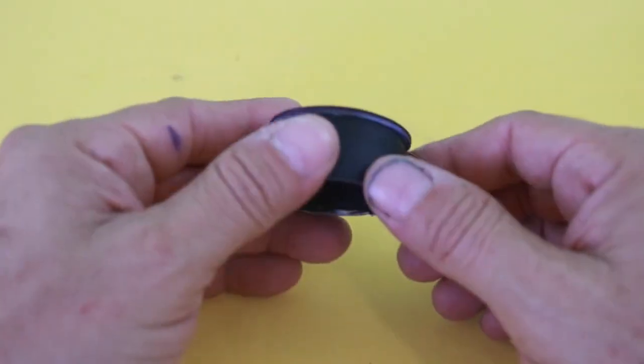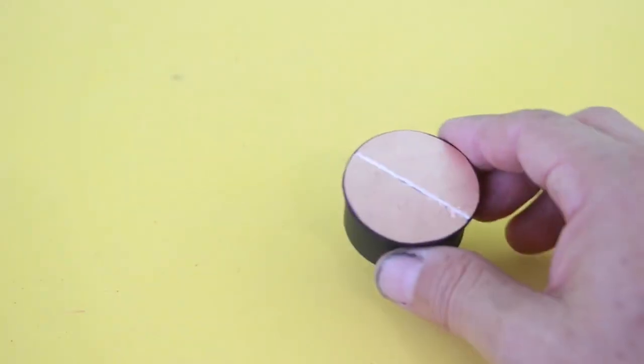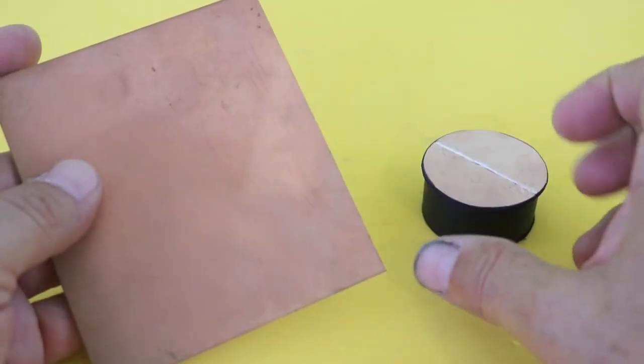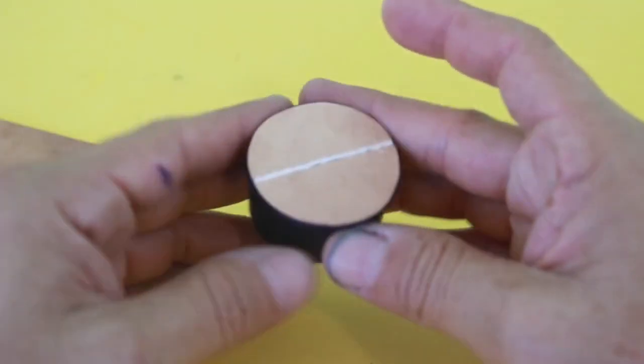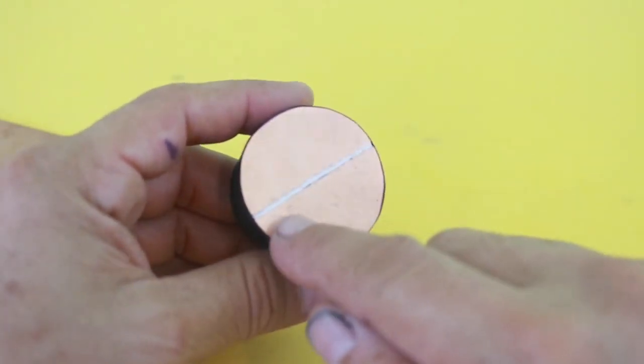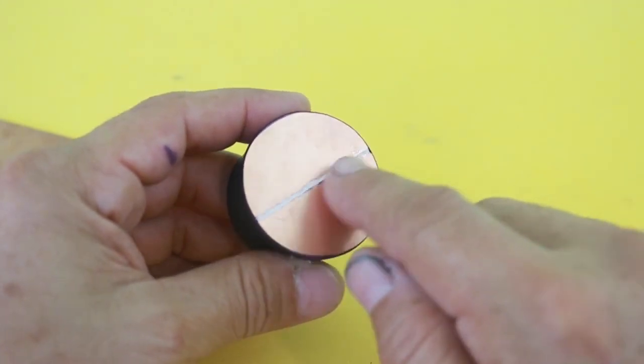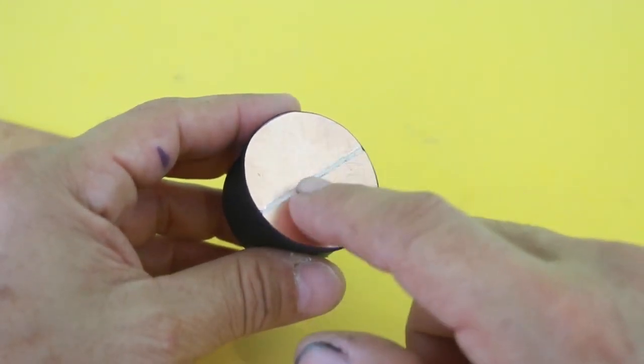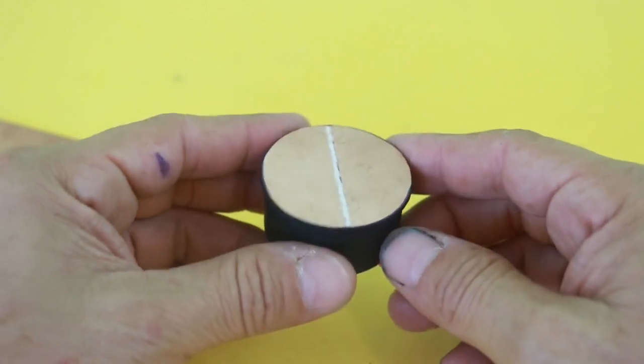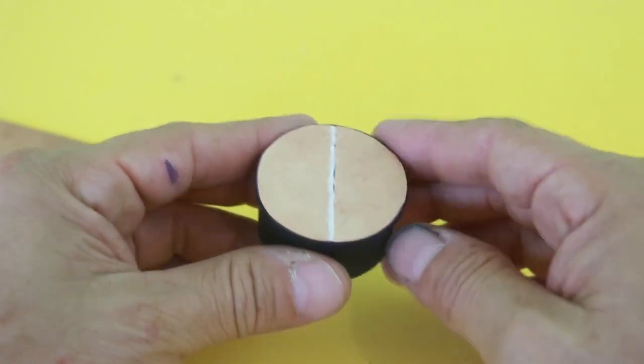The commutator is made out of a phenolic plate that I cut into a circle. You need to remove the copper, leaving a strip in the middle in order to form the two sections of the commutator.